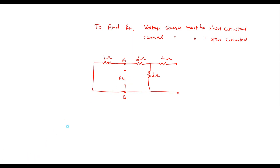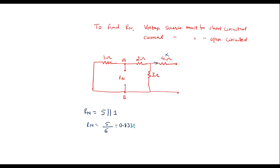Here we can observe that since this terminal is open, no current flows there. So this 4 ohm will not come into the picture. Now the 2 ohm and 3 ohm will be in series, and that combination will come in parallel with the 1 ohm resistor. Therefore Rn equals 2 plus 3, which is 5, in parallel with 1 ohm. So Rn equals 5 times 1 divided by 5 plus 1, which is 5 by 6, equal to 0.8333 ohms.